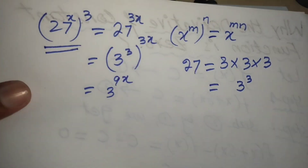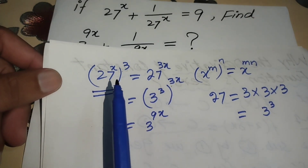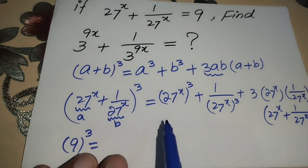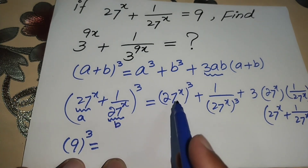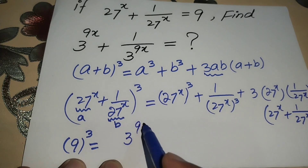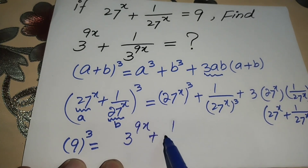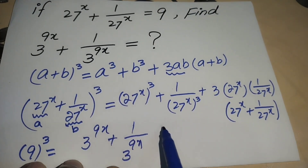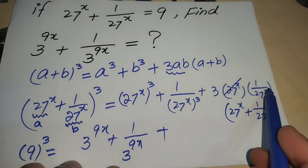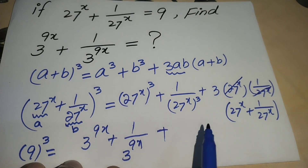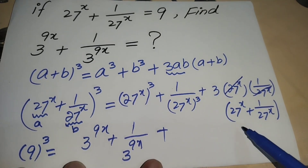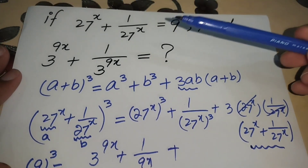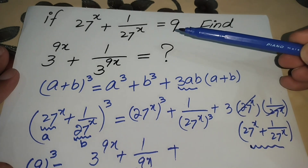So 27^x whole power 3 equals 3^(9x). Substituting this back, we obtain 3^(9x) + 1/3^(9x). The 27^x terms in the 3ab part cancel each other, and substituting 27^x + 1/27^x = 9 gives us 9.